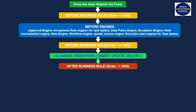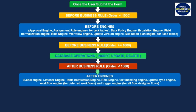After business rules are basically scripts configured to execute after the database operation. Then after engines — including the label engine, listener engine, table notification engine, role engine, text indexing engine, update sync engine, workflow engine, and trigger engine — get executed.